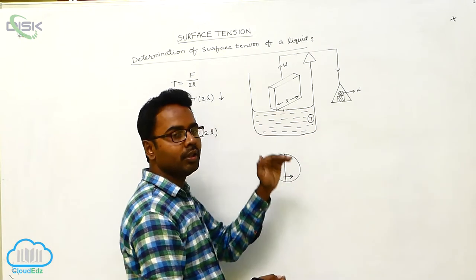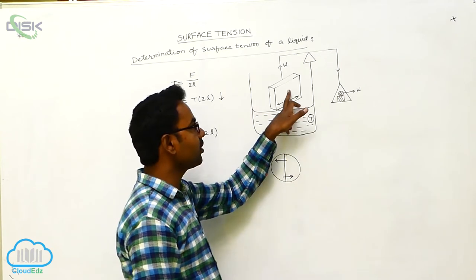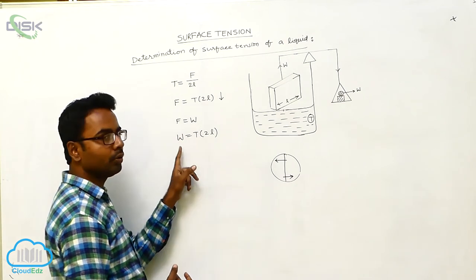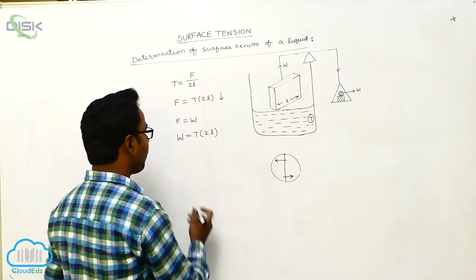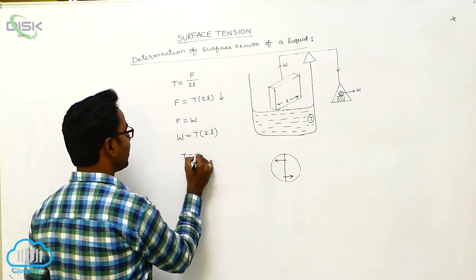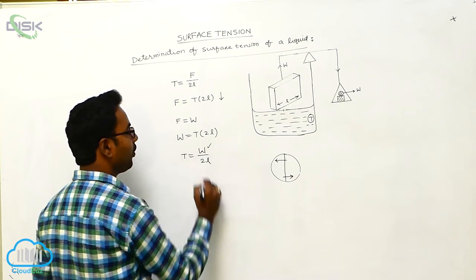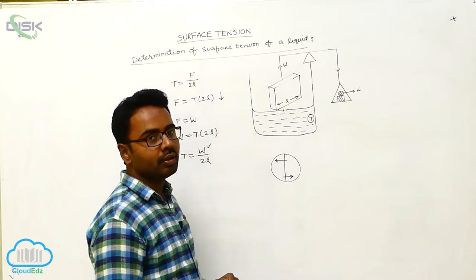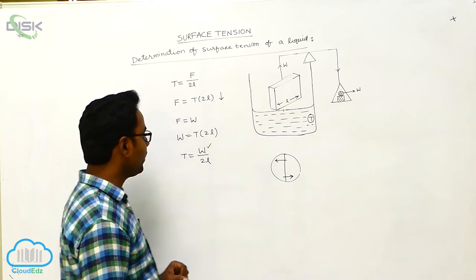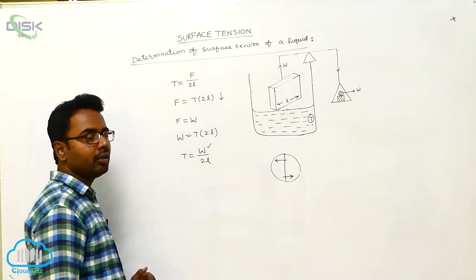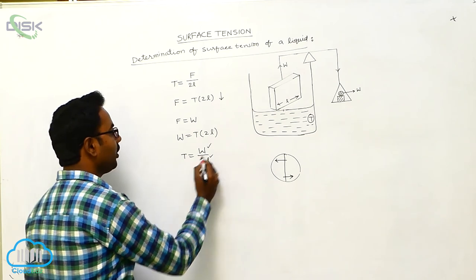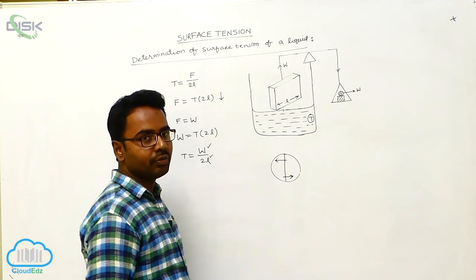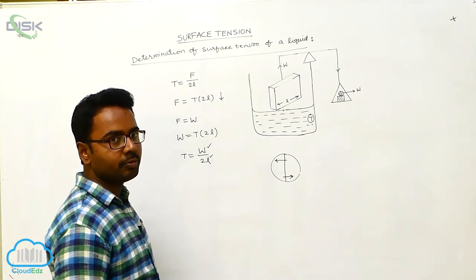Since F = W and F = T × 2L, we can write W = T × 2L. Therefore, T = W / 2L, where W is the additional weight placed in the pan to just detach the rectangular plate from the water surface, and 2L is the length of the rectangular plate. By substituting the values of W and L, we can find the surface tension of the given liquid experimentally.